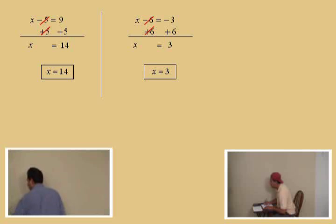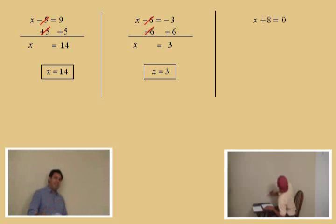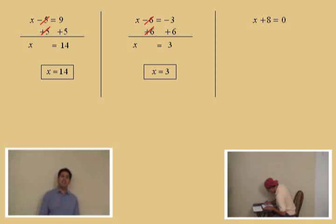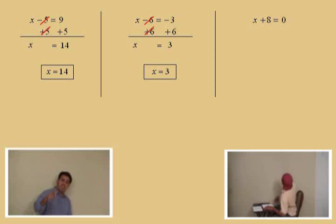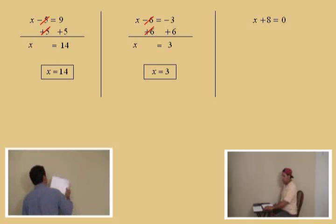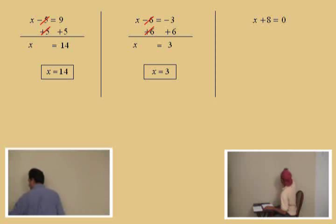Let's do another one: x plus eight equals zero. Some of you might already know the answer, but if someone on the street asks you to solve it, this is how you explain it. x plus eight equals zero — you're going to subtract eight from both sides, right Charlie?